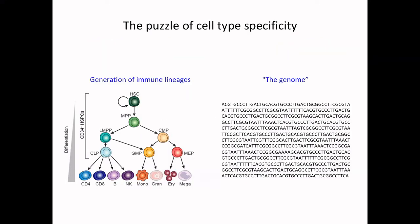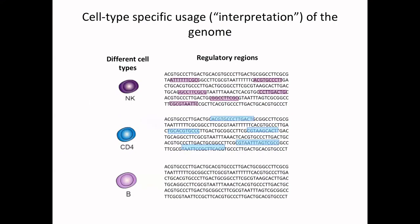The motivation goes back to a fundamental question in biology: how is it that every cell type in our body essentially has the same static copy of the genome, yet we have many different cell types with different functions? A really well-studied example of this is in the immune system, where immunologists for the past two decades have identified and characterized at least a hundred different immune cell types, yet we know they're all differentiated from the same progenitor cells. So how does this dichotomy arise?